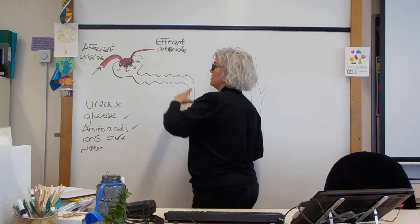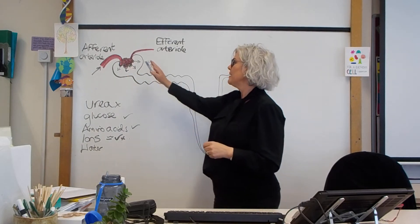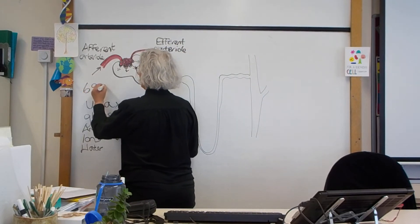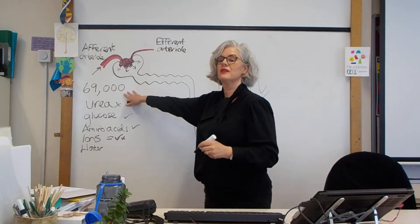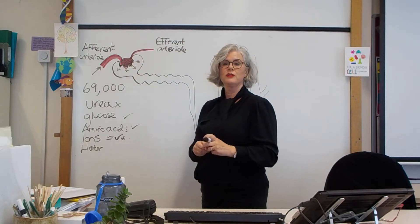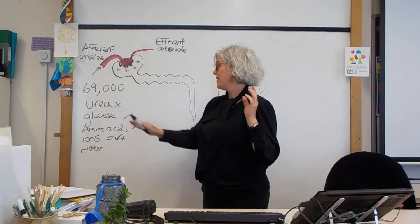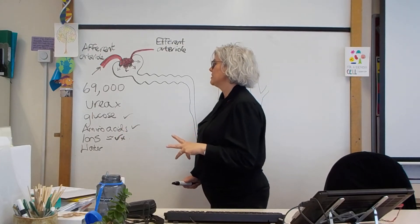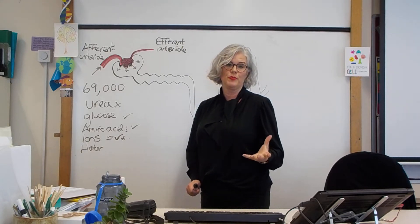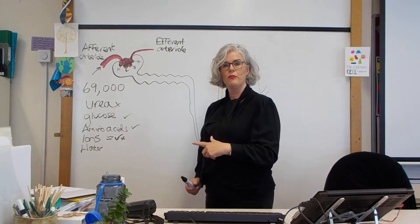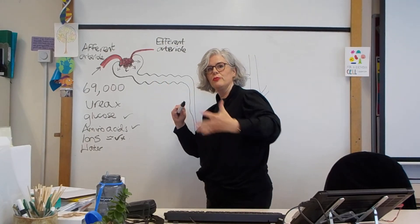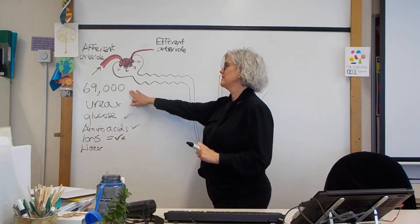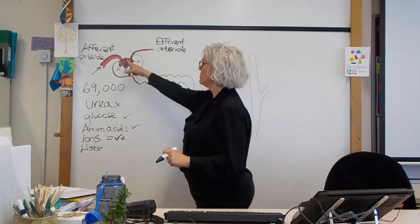There is a size limit on this: the renal threshold is 69,000. Anything with a molecular mass less than 69,000 is small enough to be pushed out of the glomerulus. That includes glucose, water, ions, and amino acids. It does not include large proteins — plasma proteins — which are the ones that cause the oncotic pressure pulling water back into the capillary.